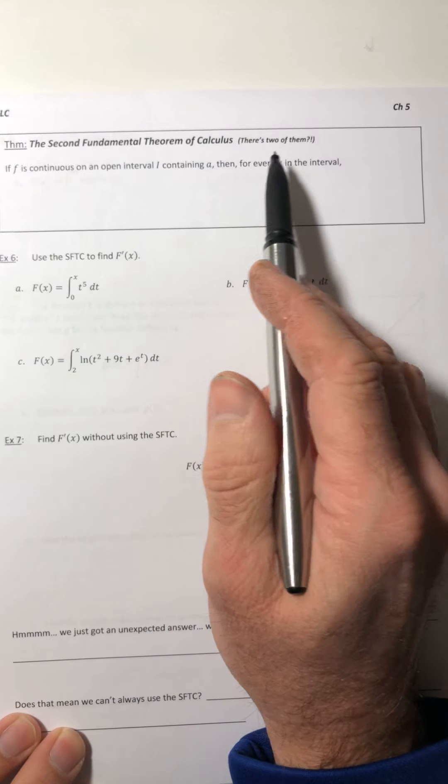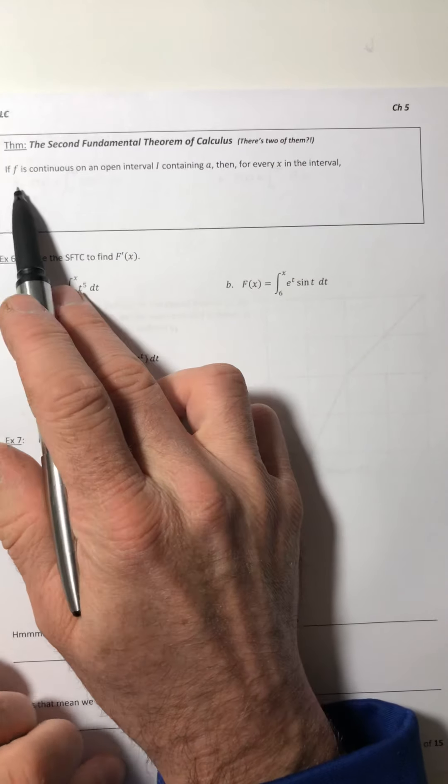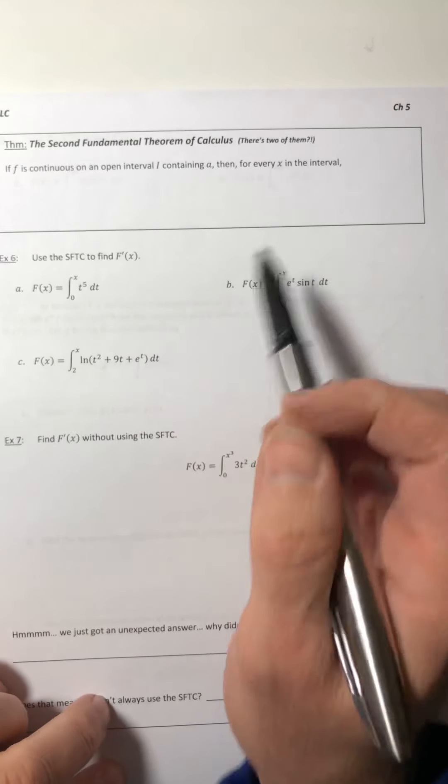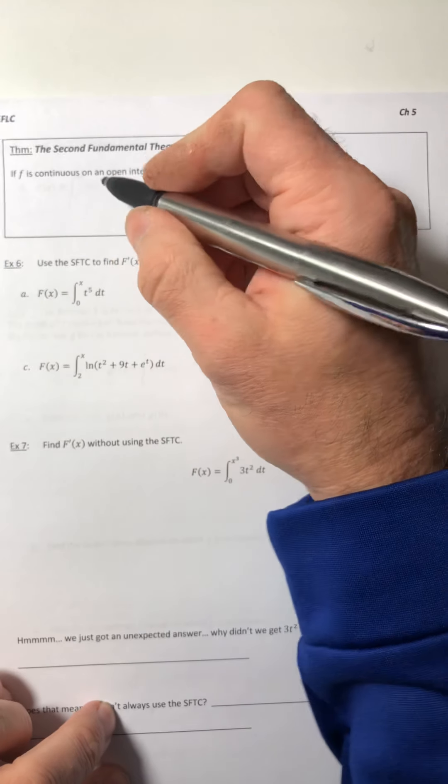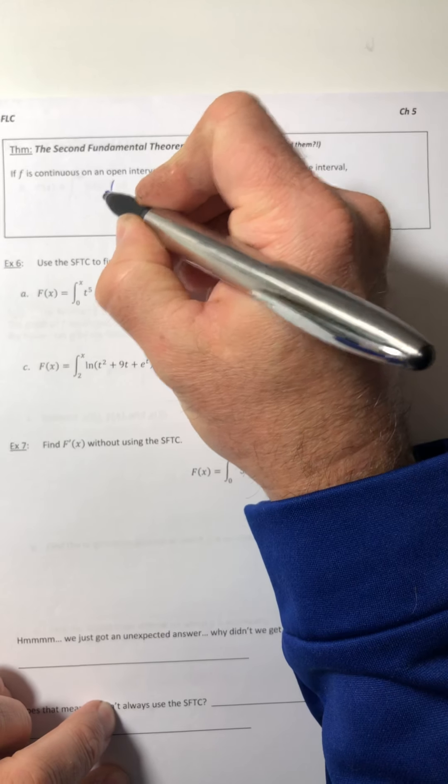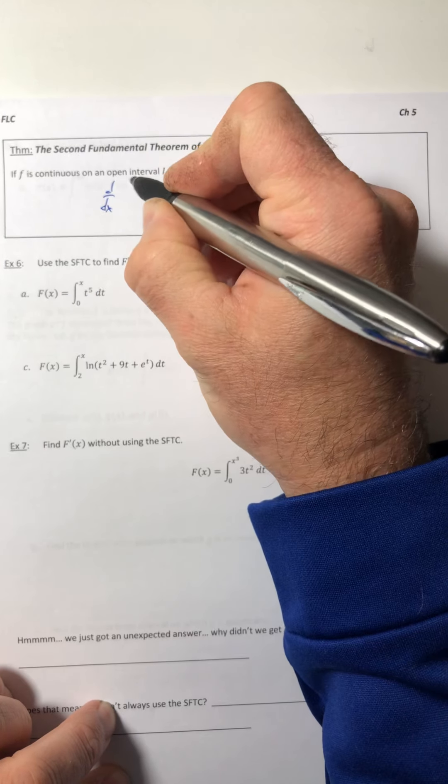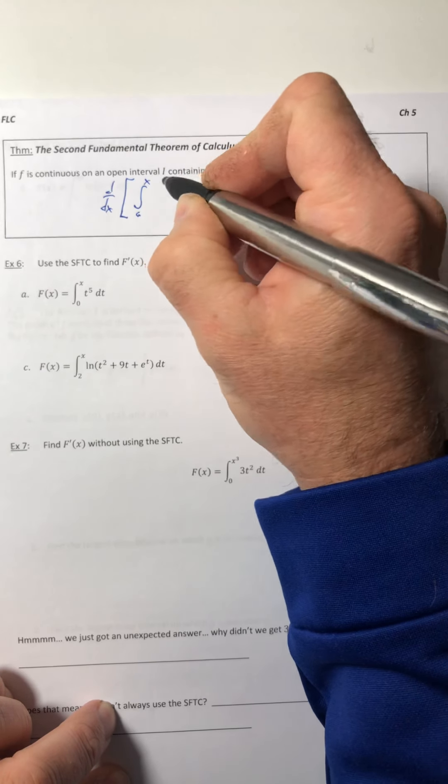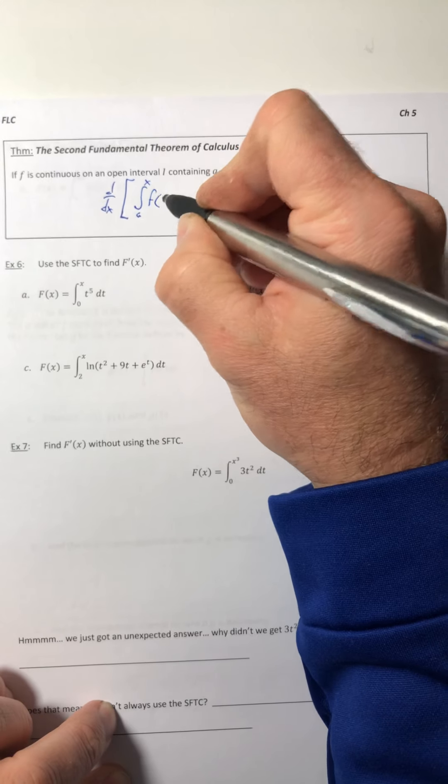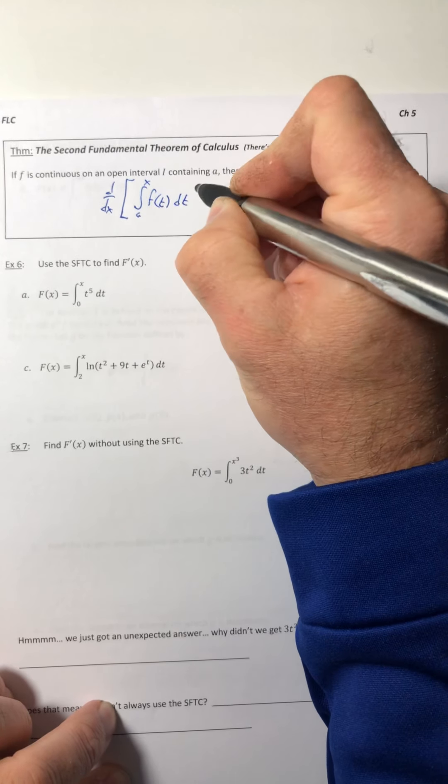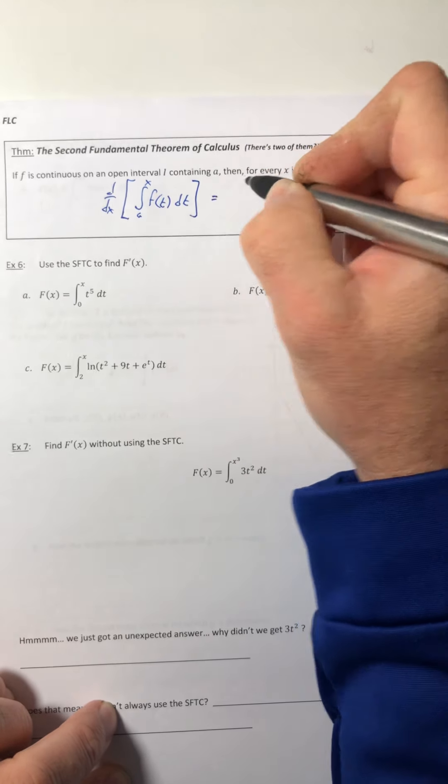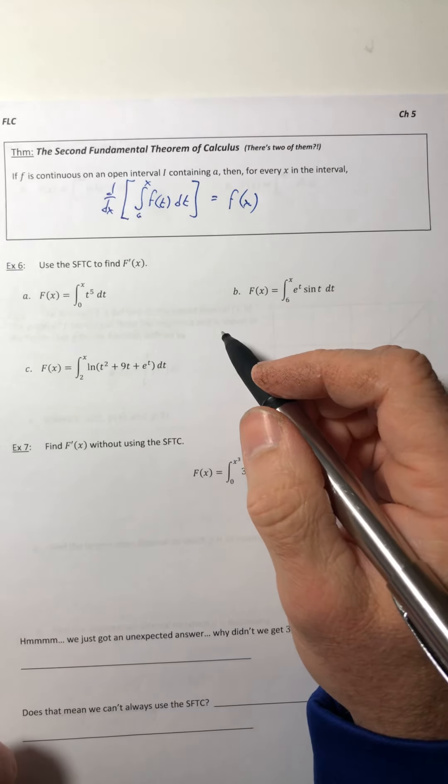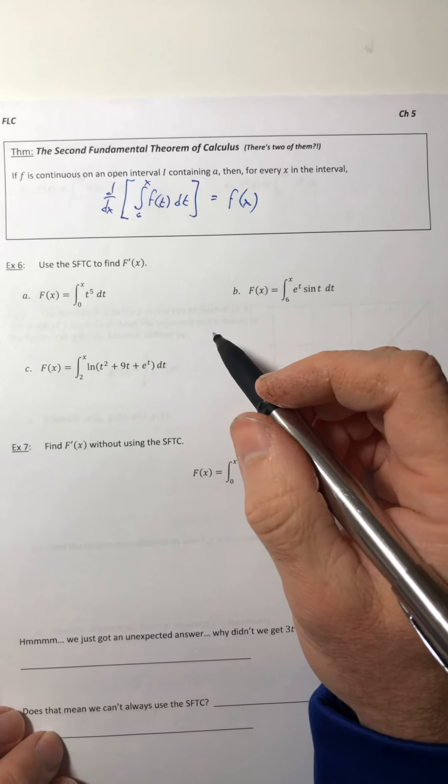So that leads us right into the second fundamental theorem of calculus. That's right, there's two of them. If the function f is continuous on an open interval i containing a, then for every x in the interval, the derivative of the integral from a to x of f(t) dt is going to equal f(x). And that is the fundamental theorem of calculus.